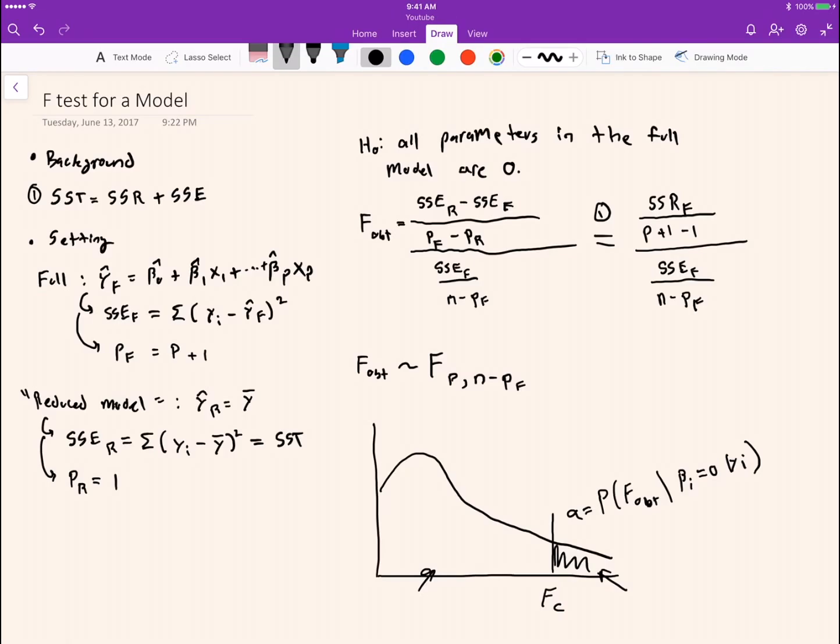So in this context, rejecting the null hypothesis would mean that there's evidence that at least one of the parameters in the full model are non-zero.